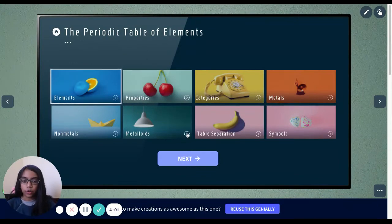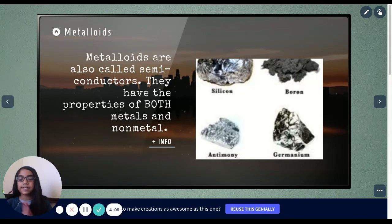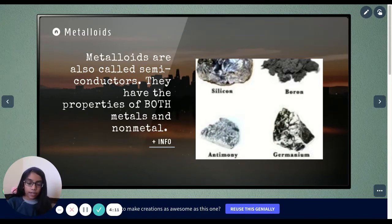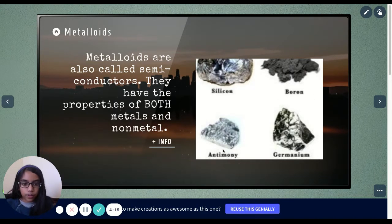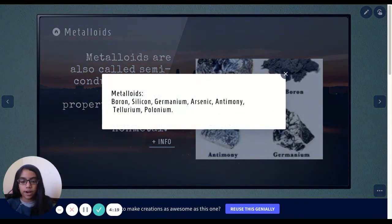Let's move on to metalloids. Metalloids are also called semiconductors. They have the properties of both metals and non-metals. You can see silicon, boron, antimony, and germanium. But all of the metalloids are boron, silicon, germanium, arsenic, antimony, tellurium, and polonium.